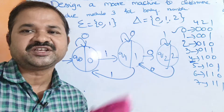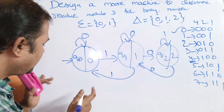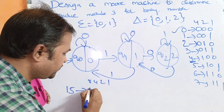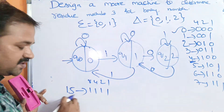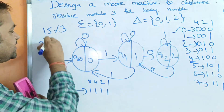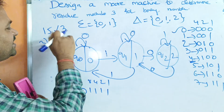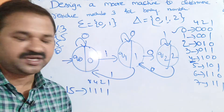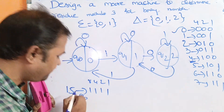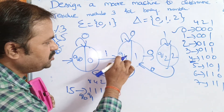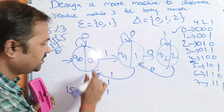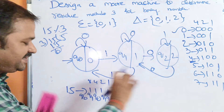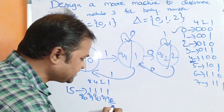Let's verify the machine with the input 15. In binary (4 bits: 8,4,2,1), 15 is 1111. 15 modulo 3: 3 times 5 equals 15, so the remainder is 0 — we should end at Q0. Tracing: Q0 on 1 → Q1; Q1 on 1 → Q0; Q0 on 1 → Q1; Q1 on 1 → Q0. The output of Q0 is 0. Correct!